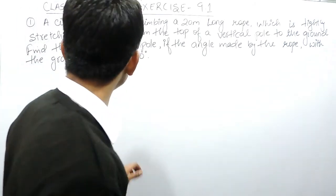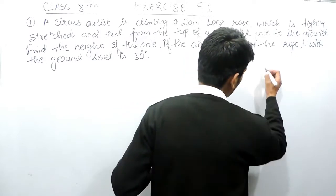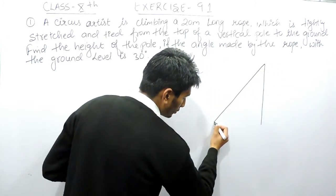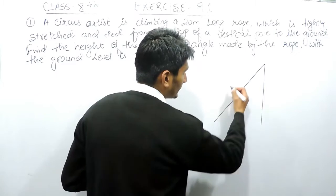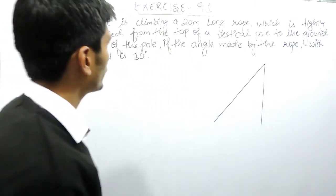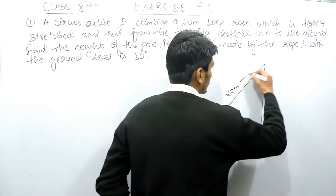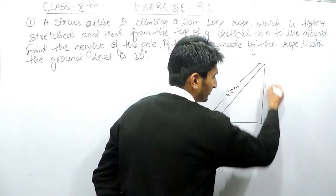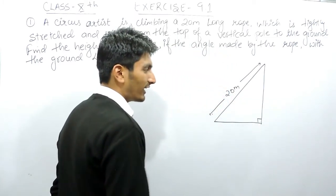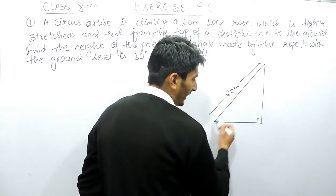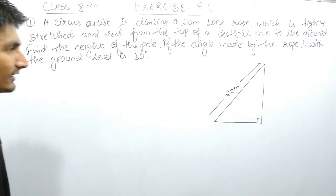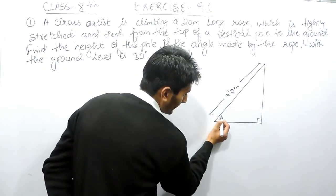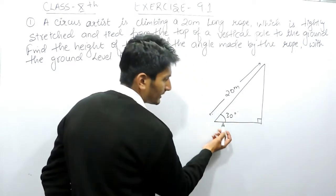The question says a circus artist is climbing a 20-meter long rope tied from the top of a vertical pole to the ground. This is a vertical pole with a rope tied to the ground. The length of this rope is 20 meters. The vertical pole makes an angle of 90 degrees with the ground, forming a right-angle triangle. It is also given that the rope makes an angle of 30 degrees with the ground.